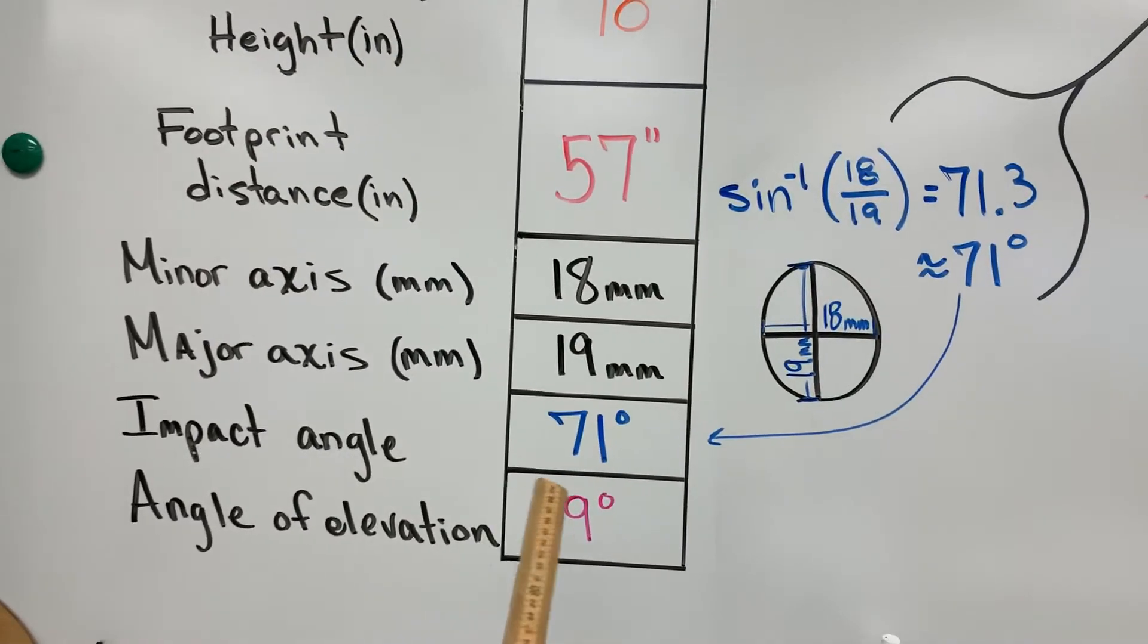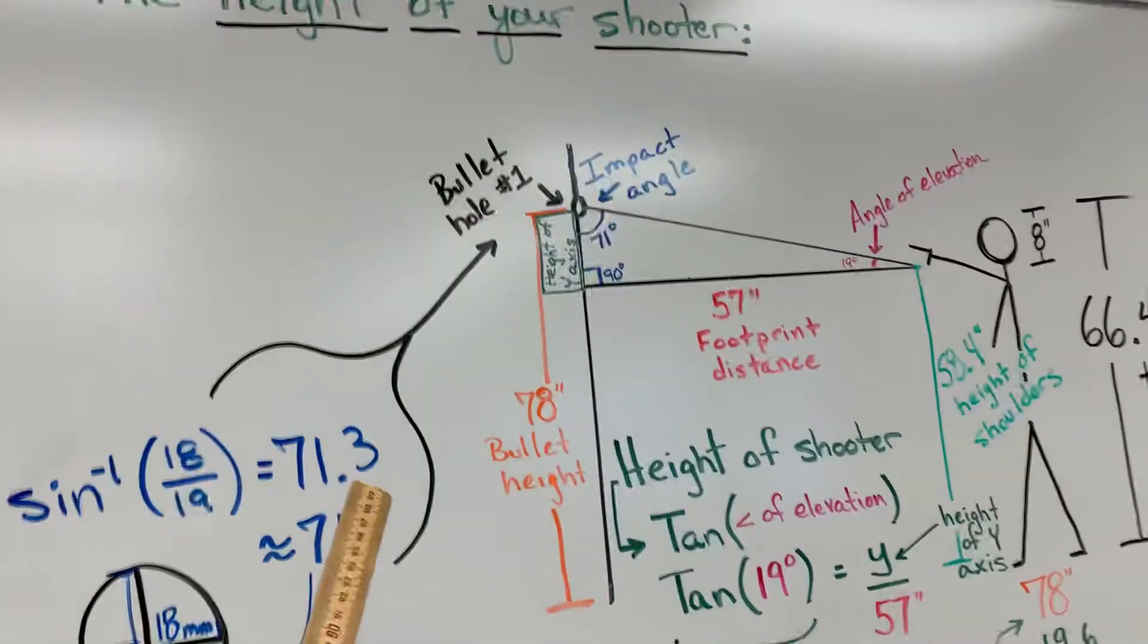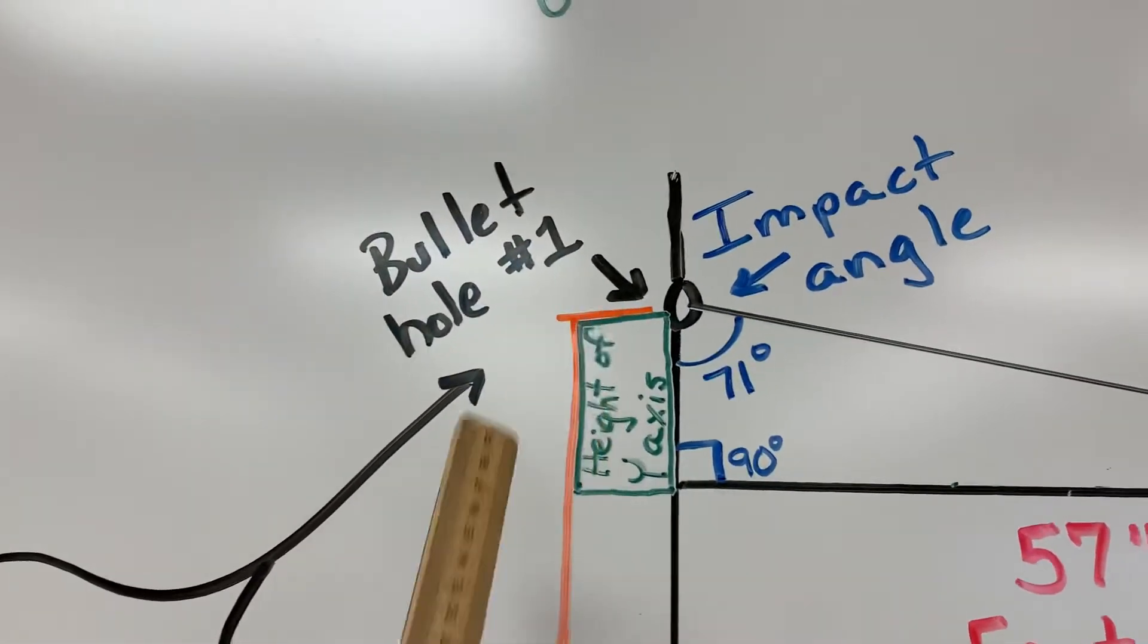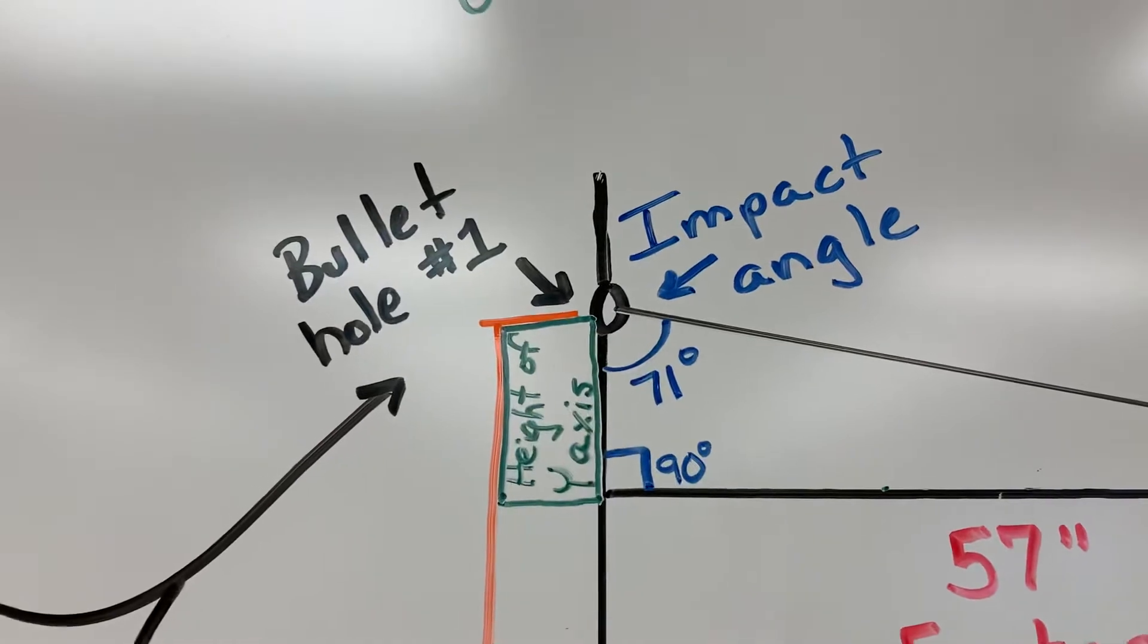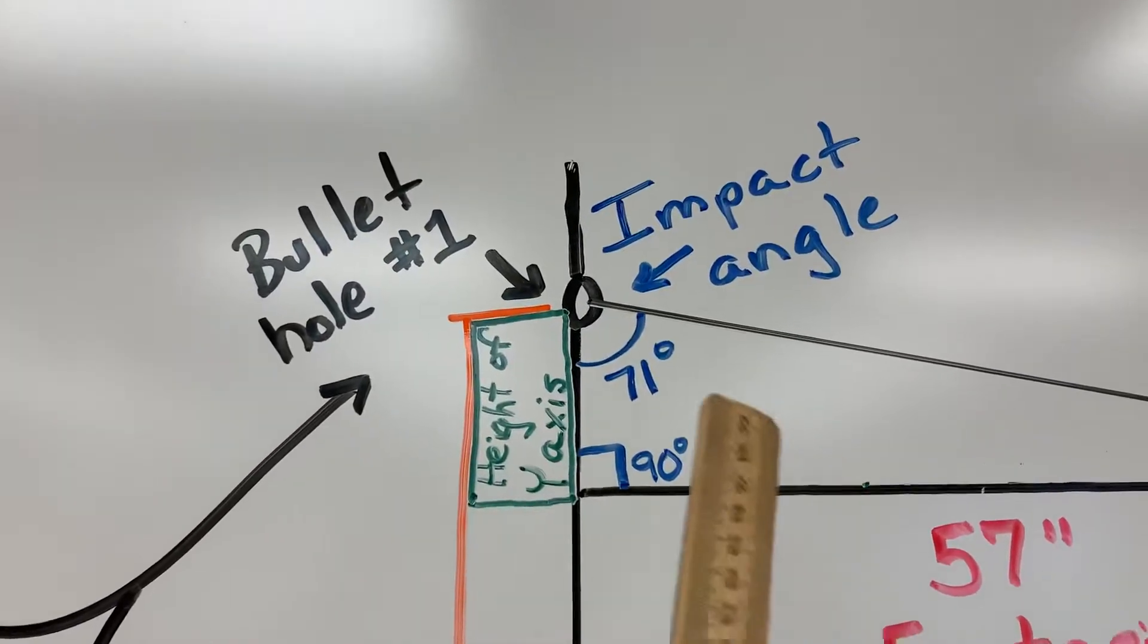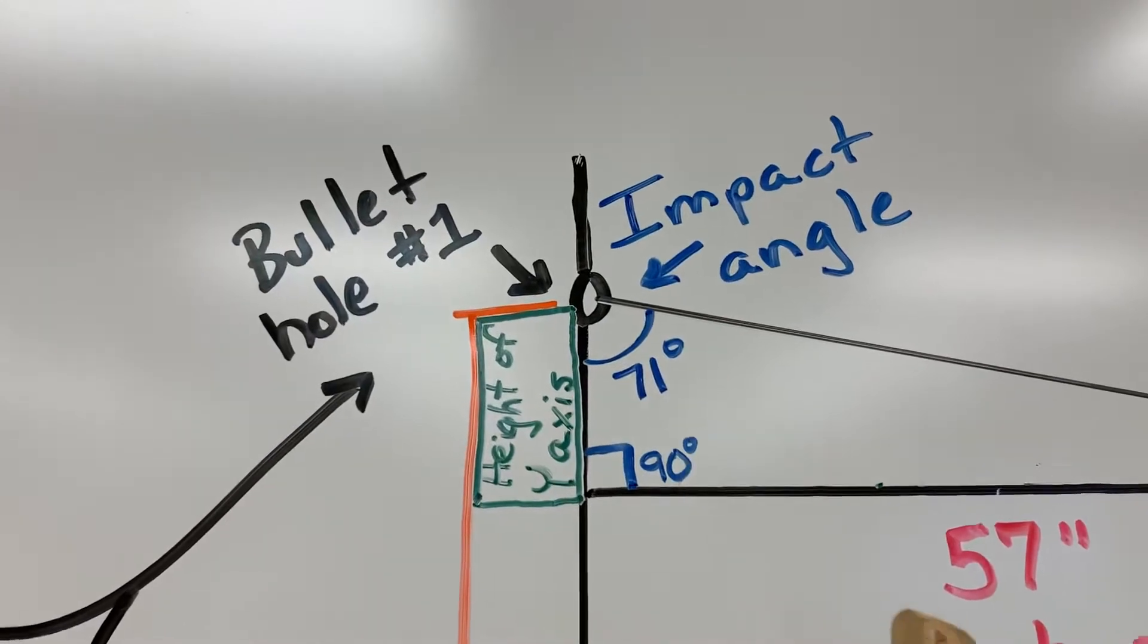So that's the angle of impact. When we actually look at the bullet hole on the wall, the angle that the bullet came in at in relation to the wall was 71 degrees. That's called the impact angle.